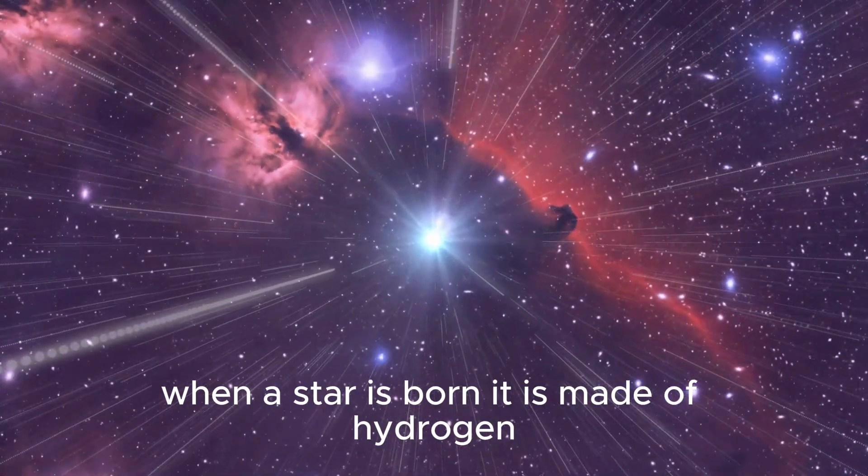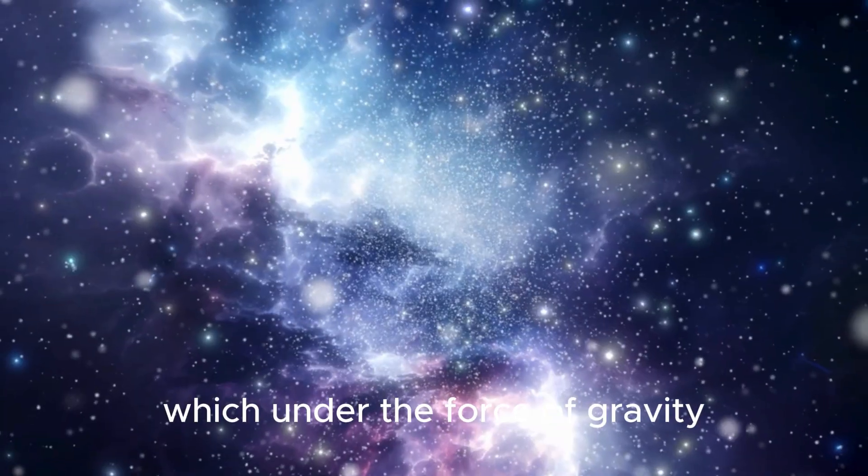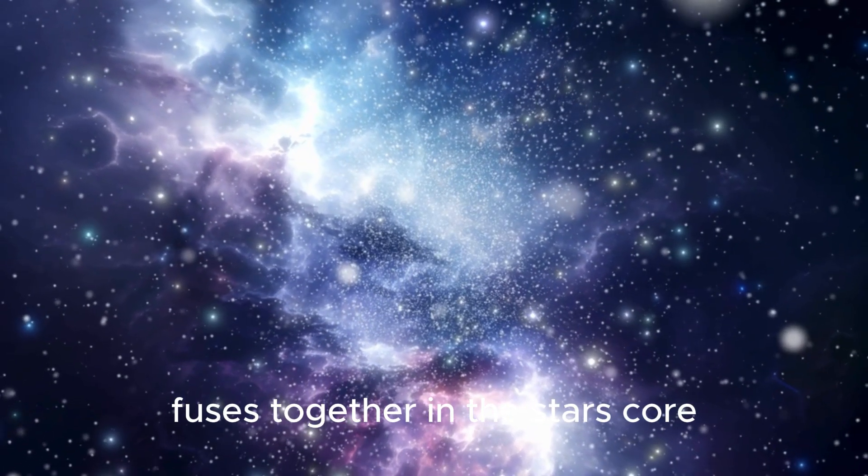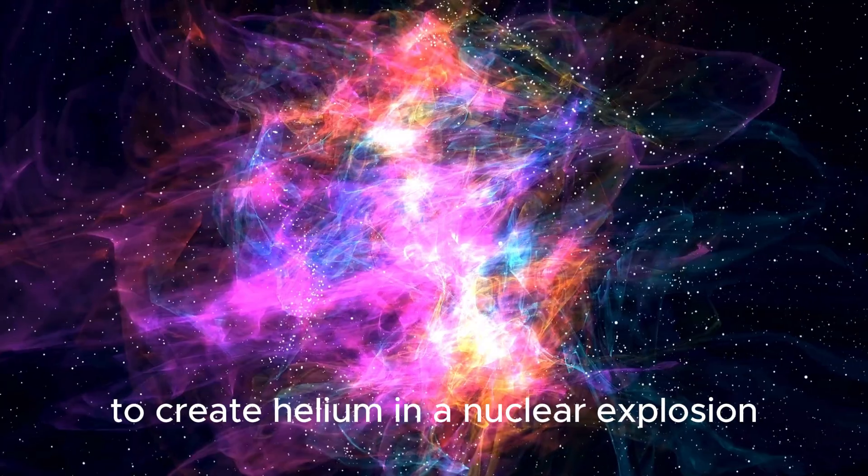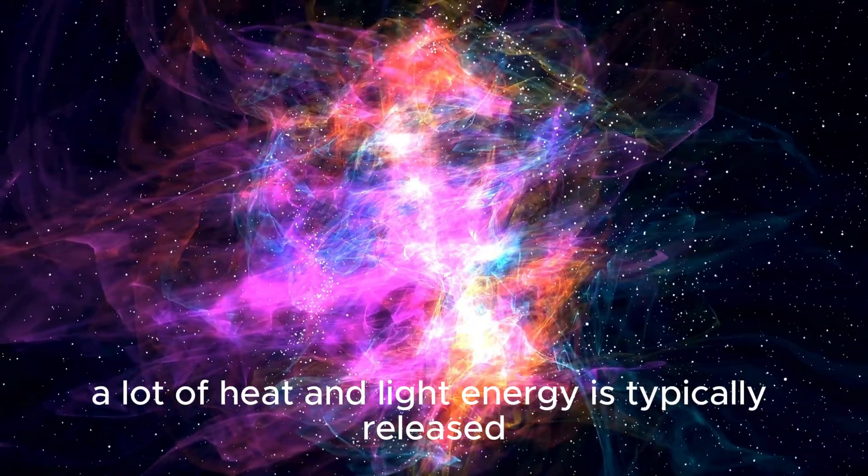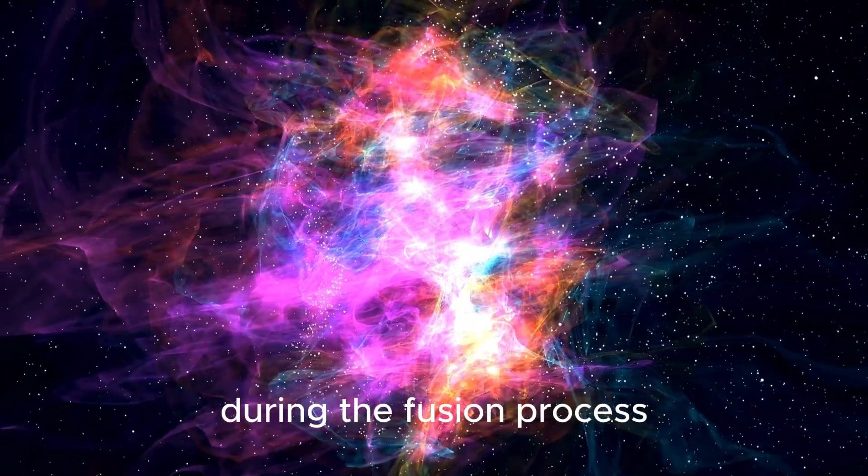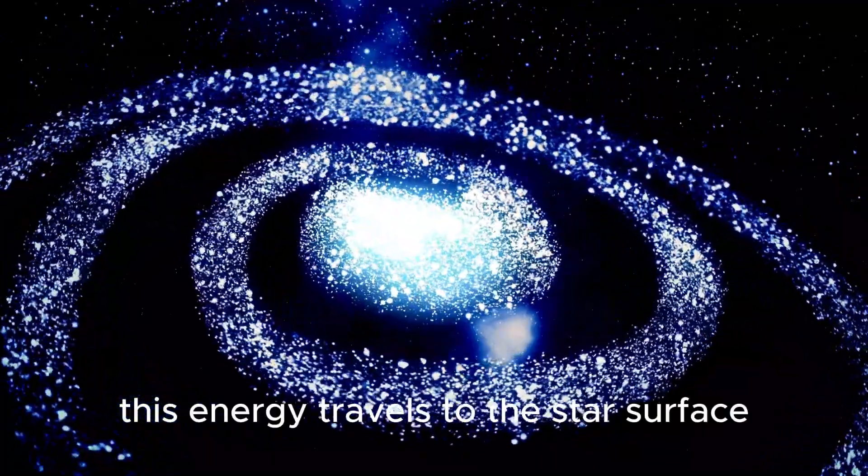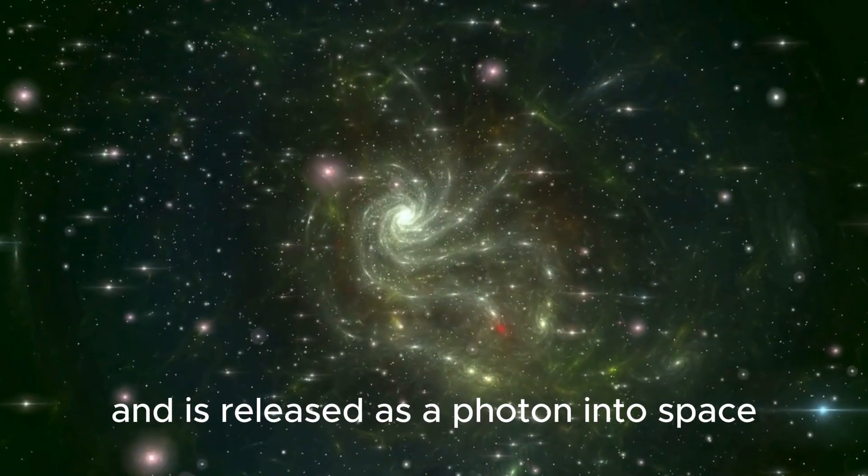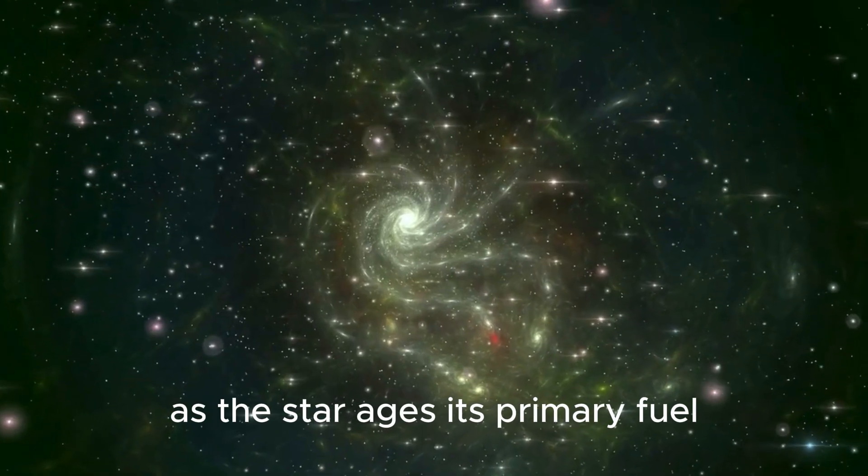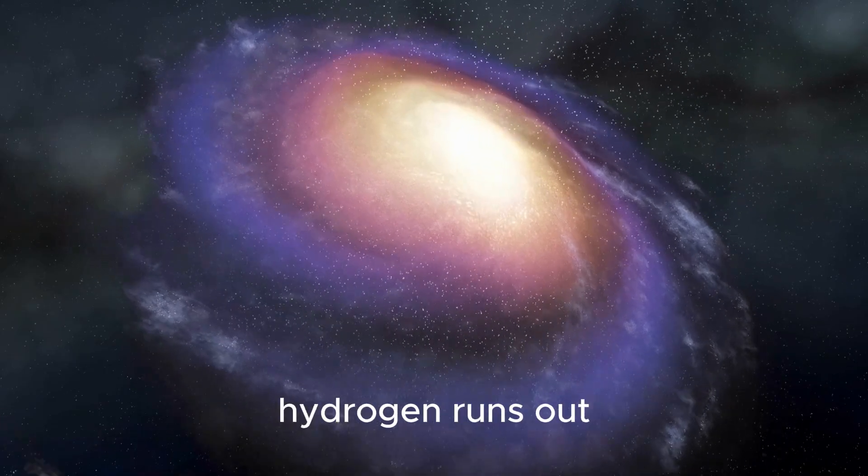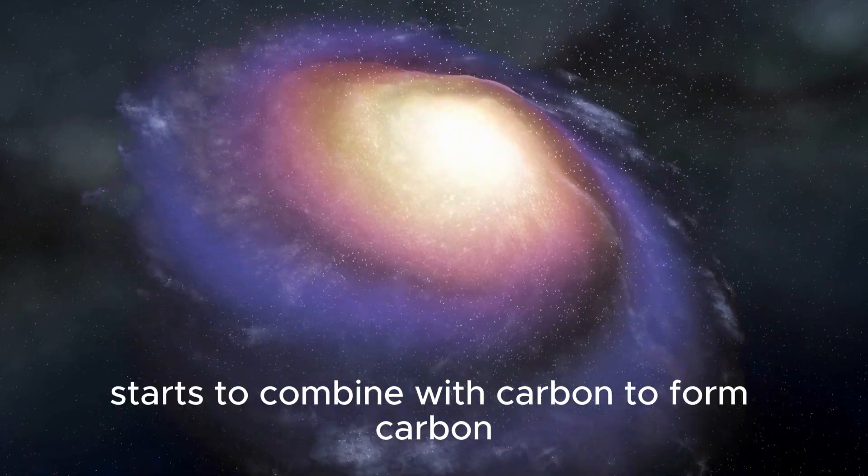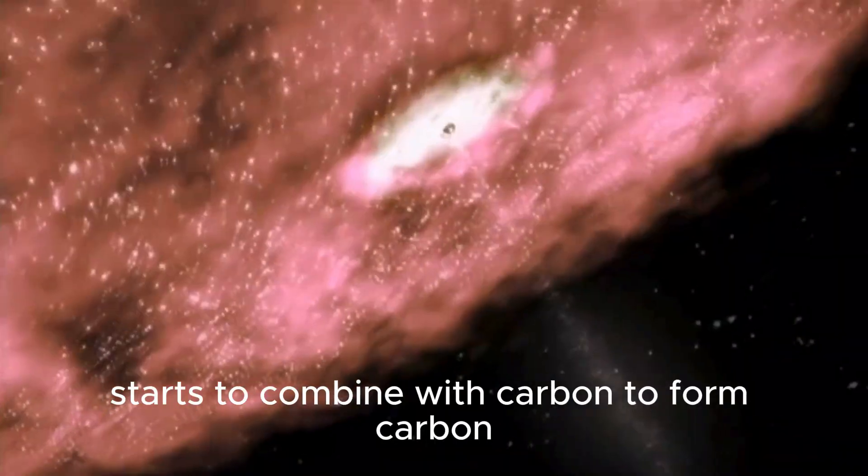When a star is born, it is made of hydrogen, which under the force of gravity fuses together in the star's core to create helium in a nuclear explosion. A lot of heat and light energy is typically released during the fusion process. This energy travels to the star's surface and is released as a photon into space. As the star ages, its primary fuel, hydrogen, runs out and helium starts to combine with carbon to form carbon.